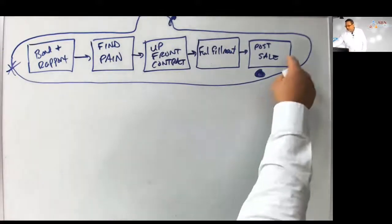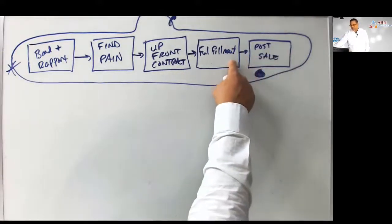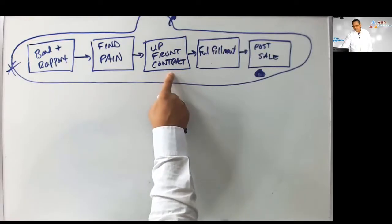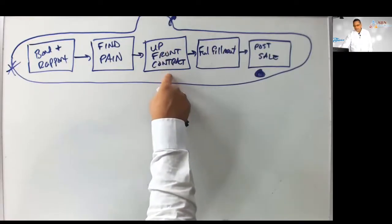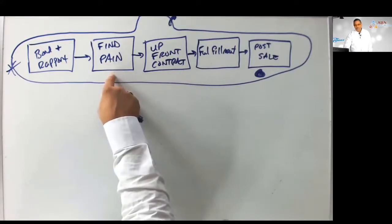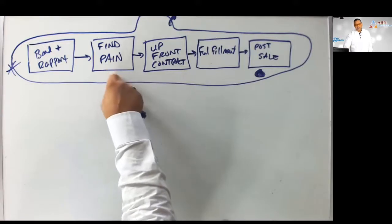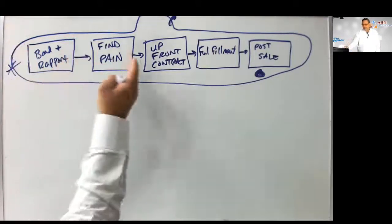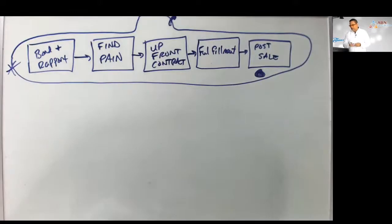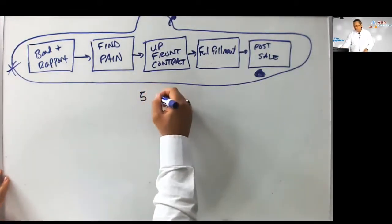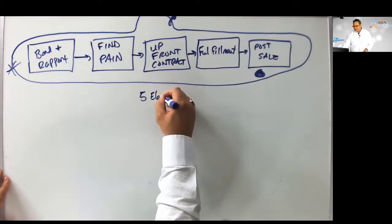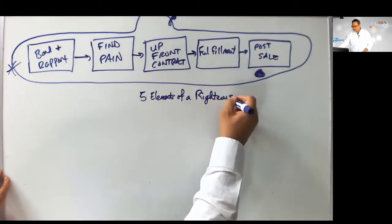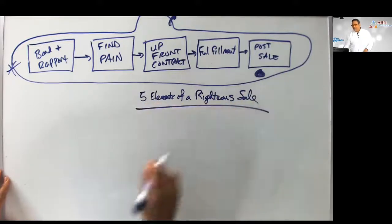You can't sell them anything until you decided that you are going to help them out and they're committed to putting an application in. You can't get them to put an application in until you find their pain and there's a reason why they need to do the application. You can't ask the hard, difficult pain questions unless they trust you and you have bond and rapport. Do you see how everything builds upon the previous compartment? These are really the five elements of a righteous sale.